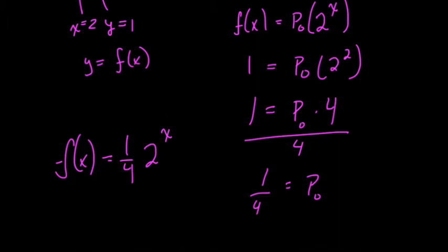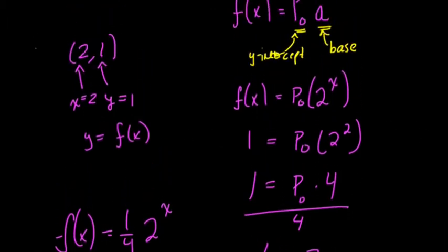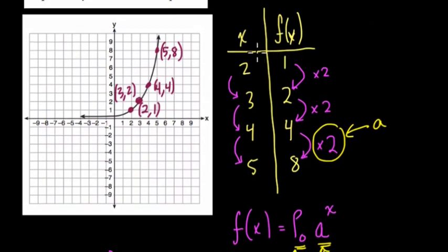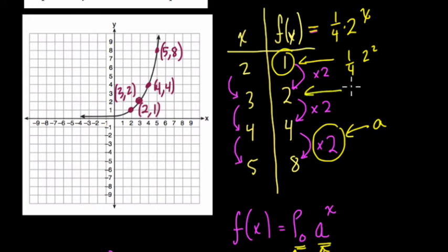So our formula would be f of x equals 1 fourth times 2 to the x. And this will work. Let's try it out, because you might feel shaky when you get one of these equations. You want to make sure your equation actually works. So here, let's see if it does indeed equal, we said, 1 fourth times 2 to the x. So if we plug in x is 2, then what do we get? 1 fourth times 2 squared. And a fourth of 4 is 1, so that works. It gives us the right output. That's what we just tested, right? Let's test the next one. What is a fourth of 2 to the third?